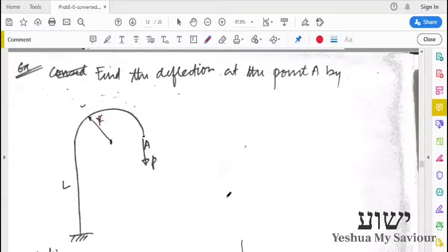Next, we have to find the deflection at point A due to this load P. Again, this is a problem for Castigliano's theorem.